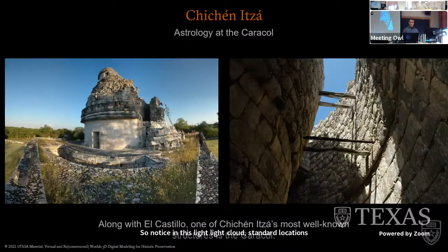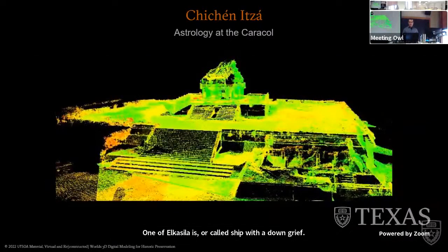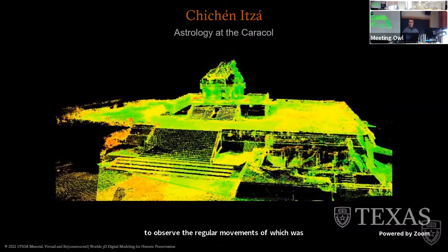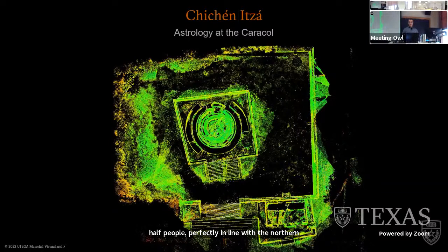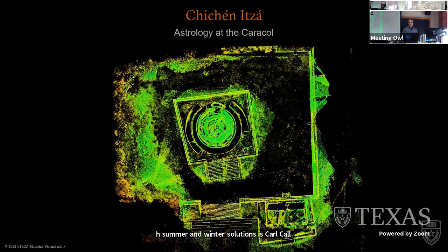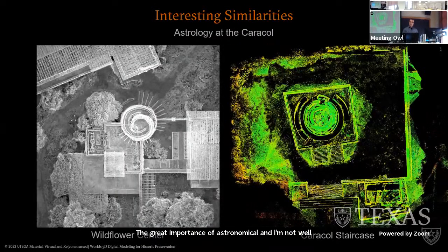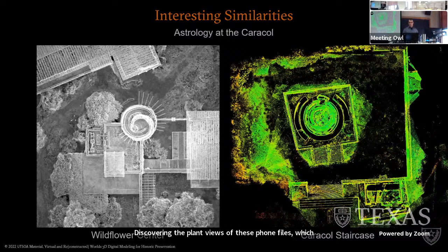Along with El Castillo is the Caracol — originally a cylindrical shape with a domed roof, it is a stone structure now in ruins. Narrow windows cut into the outer walls appear designed to observe the irregular movements of Venus, which was considered the sun's twin and held great significance for the Maya, particularly in decisions pertaining to war. The staircase at the front of the Caracol faces 27.5 degrees north of west, perfectly in line with the northern positional extreme of Venus, and its corners track both summer and winter solstices. The Caracol is one of the oldest standing observatories in the Americas.